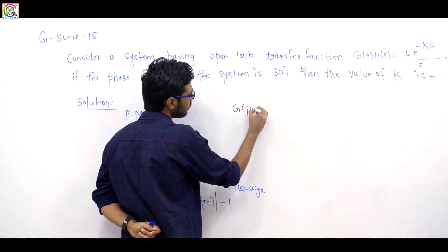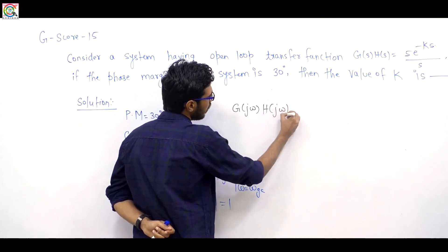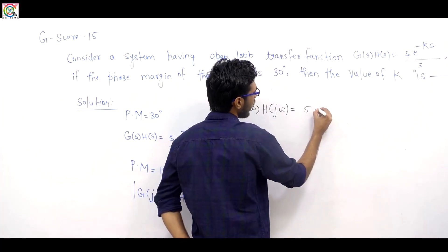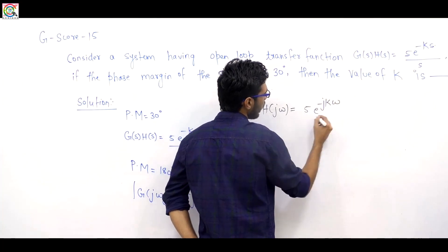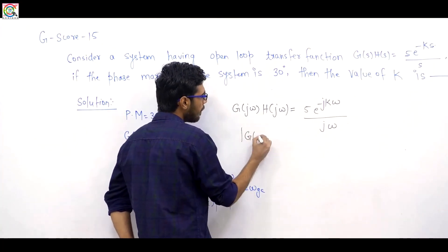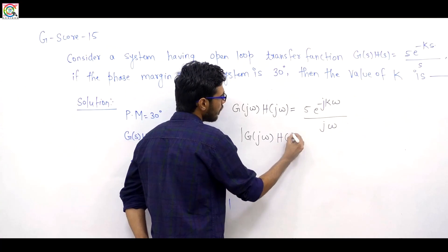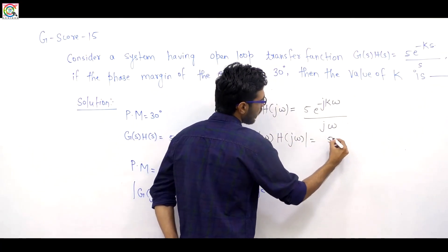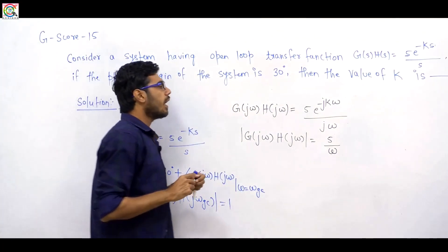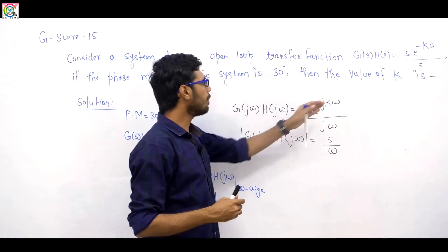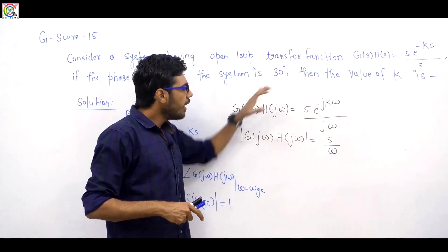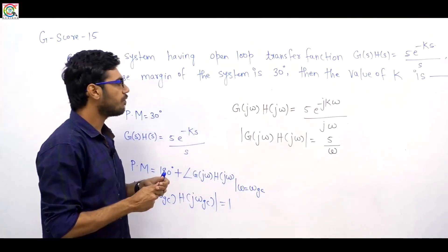First, G(jω)·H(jω) = 5·e^(−kjω) / (jω). The magnitude of G(jω)·H(jω) is simply 5/ω, because the complex exponential term e^(−jkω) has a magnitude of 1. So the open loop transfer function magnitude is 5/ω.